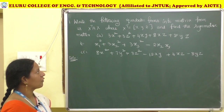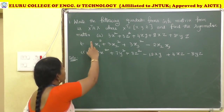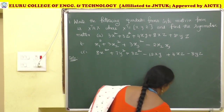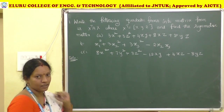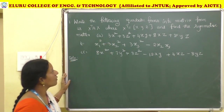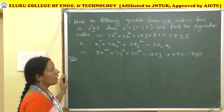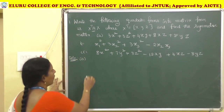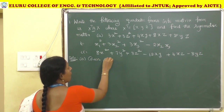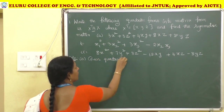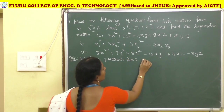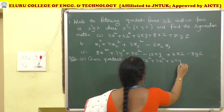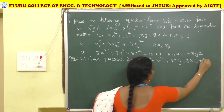Write the following quadratic form into matrix form as X-transpose AX, where X-transpose is [X, Y, Z]. X is a column matrix [X, Y, Z]. Find the symmetric matrix A. The given quadratic form is 3X² + 3Z² + 4XY + 8XZ + 8YZ.